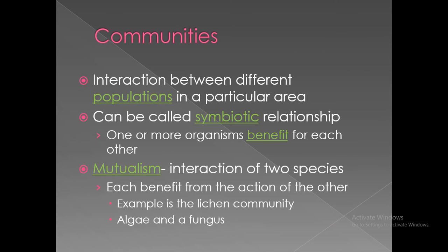After population, we have Communities. A community is the interaction between different populations in a particular area. It can involve symbiotic relationships where one or more organisms benefit from each other, such as in a food chain or food web. Mutualism is an interaction of two species where each benefits from the other — for example, the lichen community of algae and fungi.